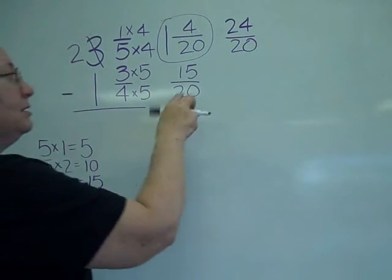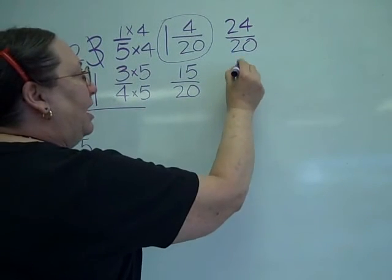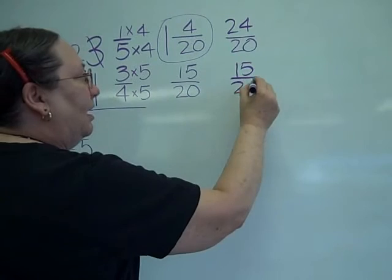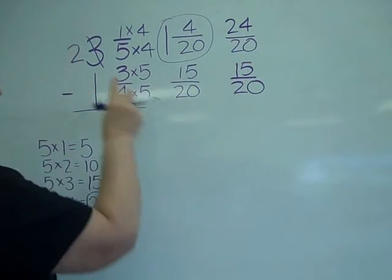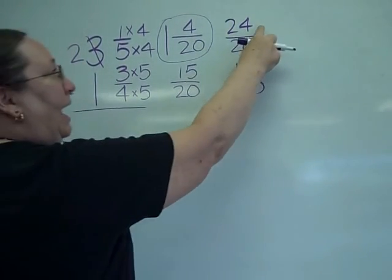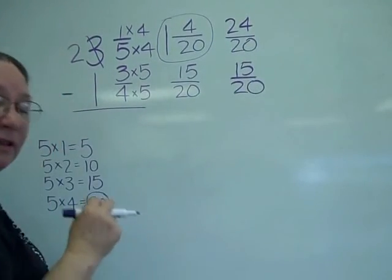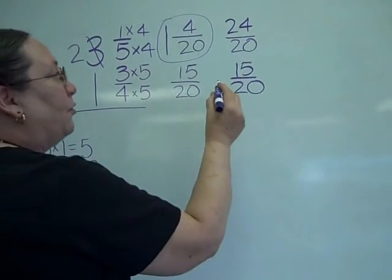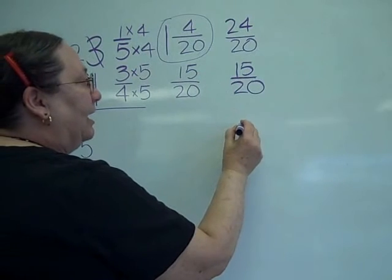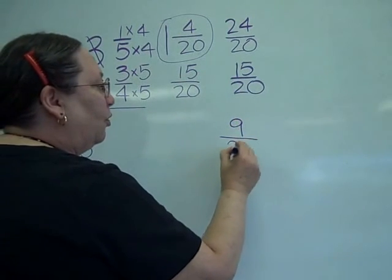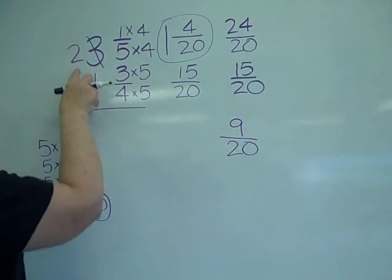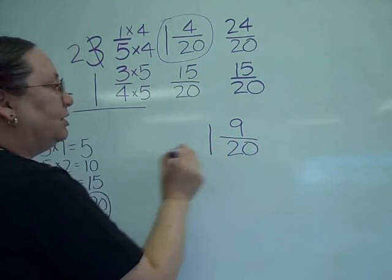Oh, now I can subtract the fifteen twentieths, which of course then I'm going to be able to subtract my whole numbers and the numerators. Twenty-four minus fifteen is nine twentieths. Two minus one is one.